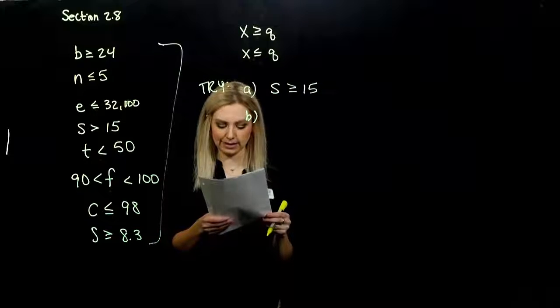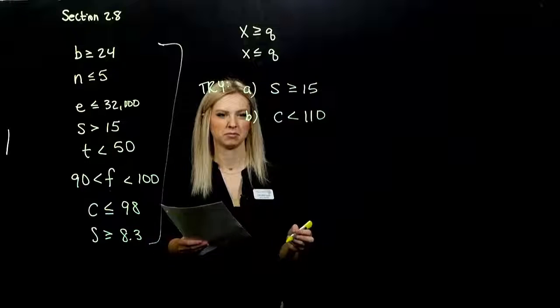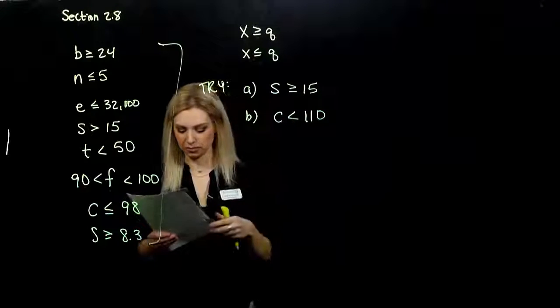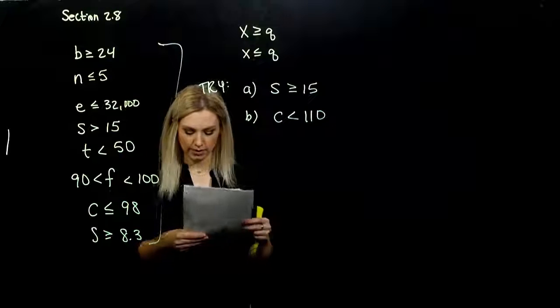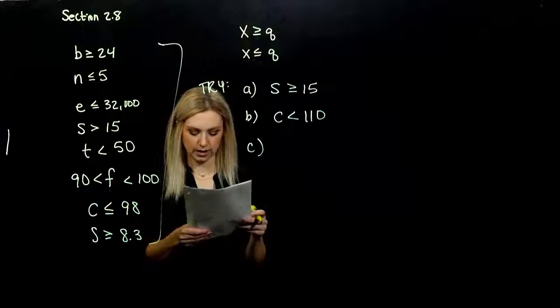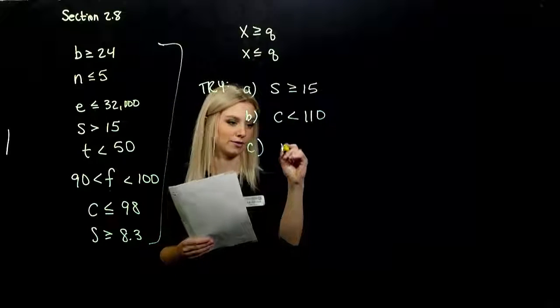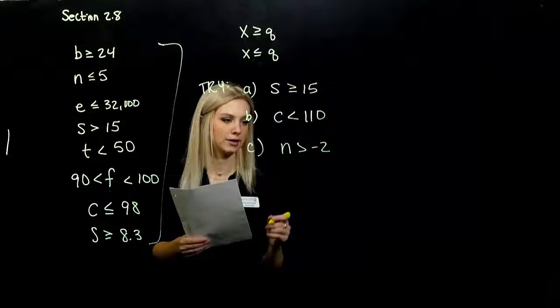What did you get for B? Camilla's weight is less than 110 pounds. Less than 110. It's kind of straightforward when they actually tell us what symbol to use in words. That number is more than minus 2. Greater than minus 2.